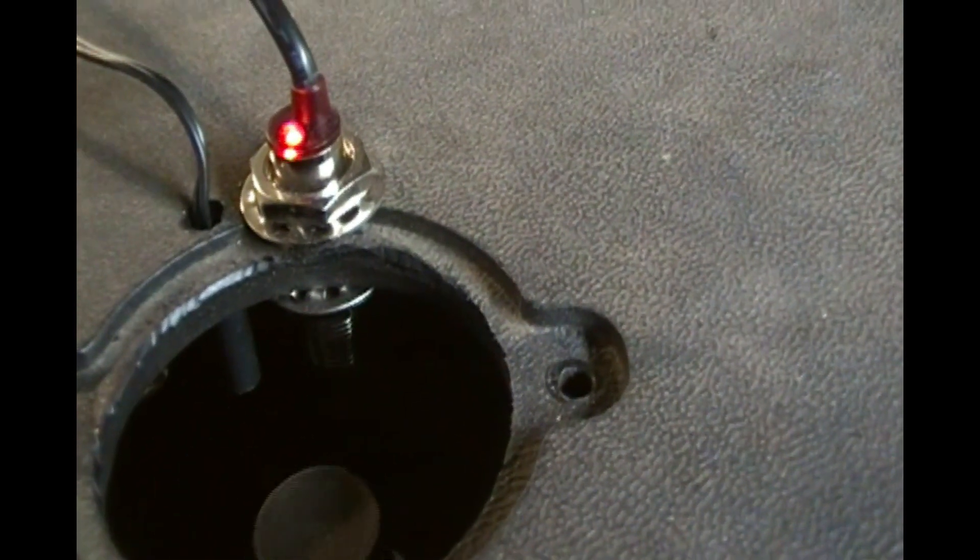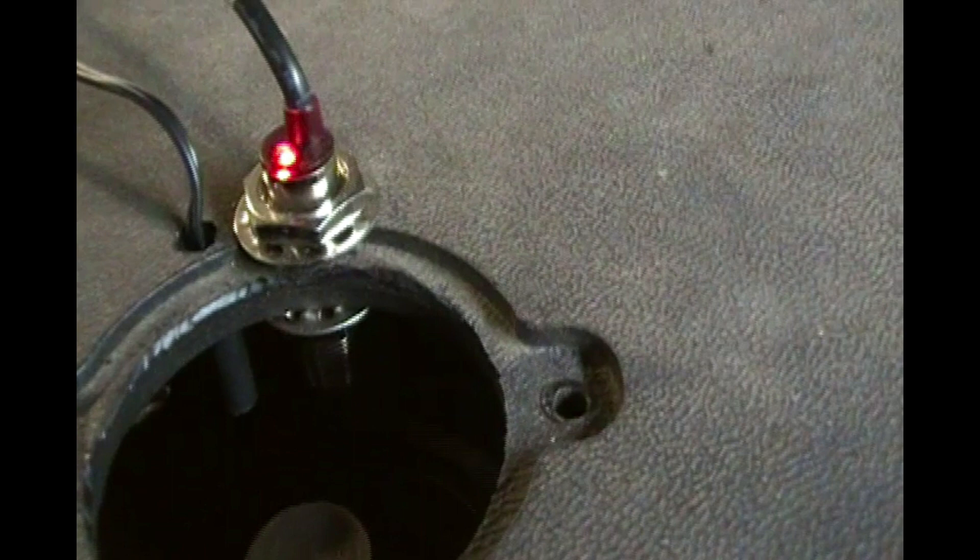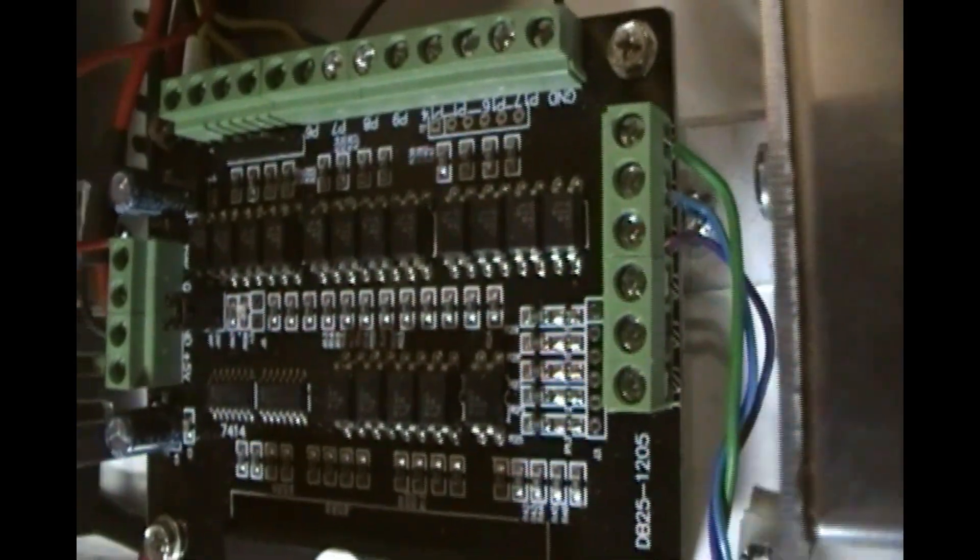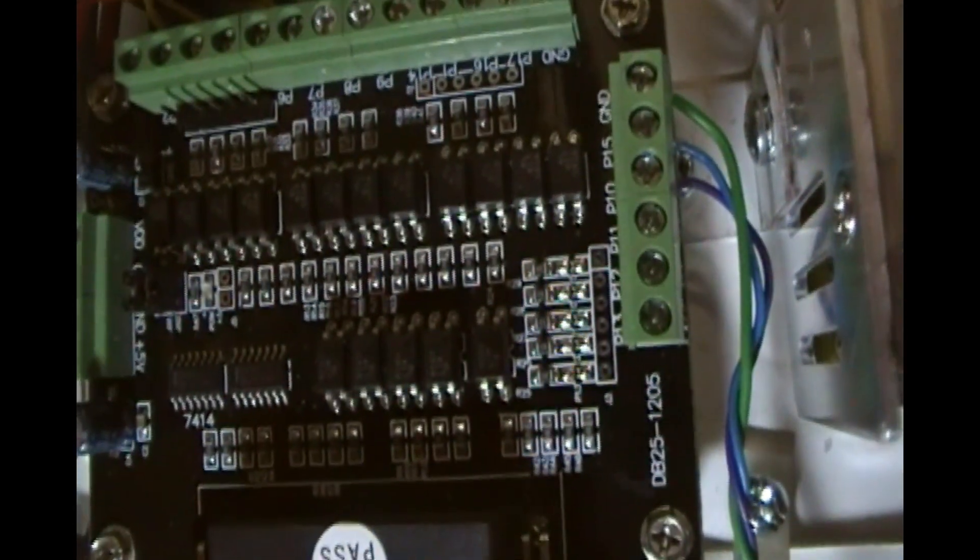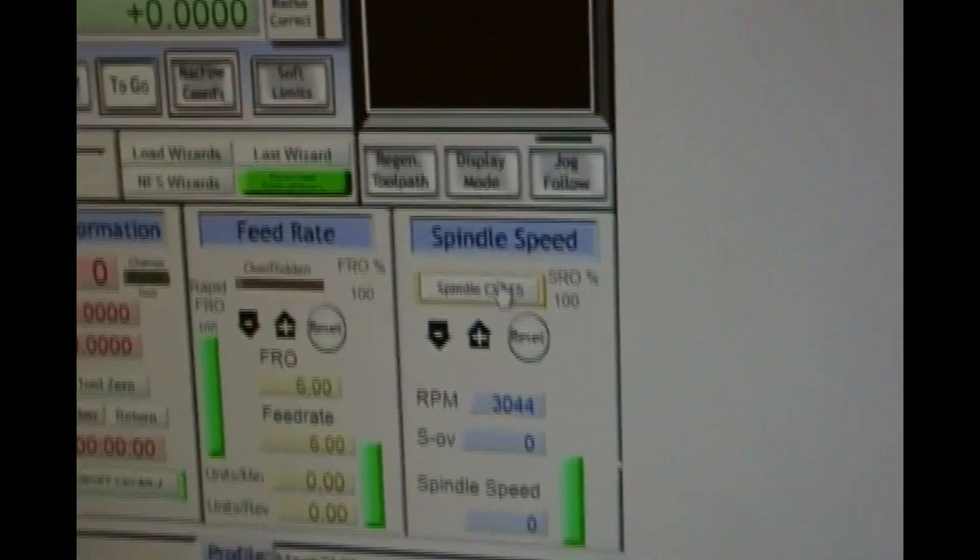Another way to verify that a reed sensor is accurate is to compare the spindle speed to the RPM displayed by a tachometer. To do this, I carefully placed a reed sensor next to the tachometer's proximity sensor. I then connected the reed sensor to the milling machine's 6-axis breakout board and configured Mach 3. The tachometer RPM and Mach 3 RPM were nearly identical.